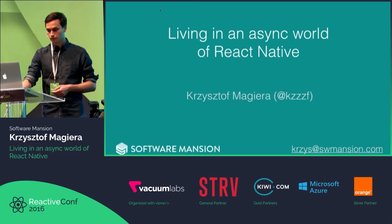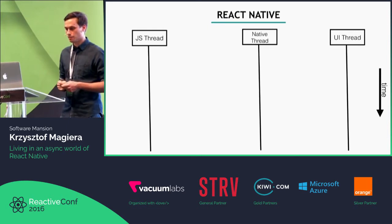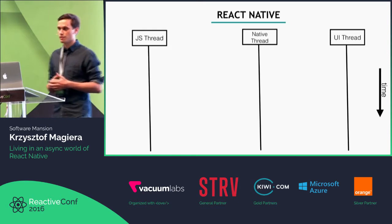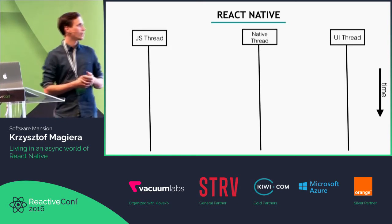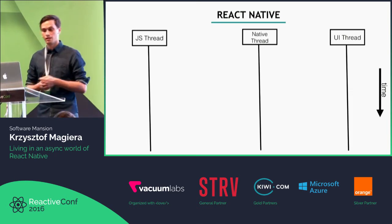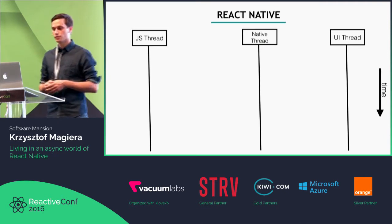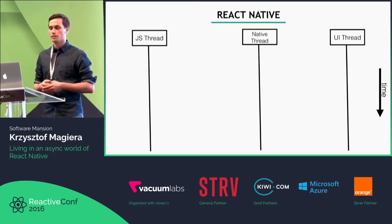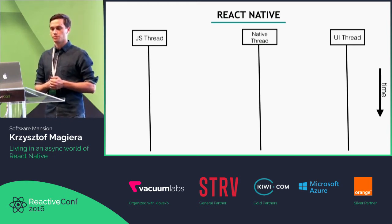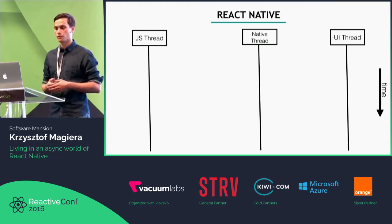I'm assuming that you know a little about React Native already. This is a template for how I'm going to talk about the interaction between the threads in React Native. On the left-hand side you have a JavaScript thread which runs JavaScript code. On the right-hand side there is a UI thread — the main native application thread that handles all the input and is responsible for rendering native views. The native thread is in the middle and is responsible for communication between these two and also for calculating the layout.